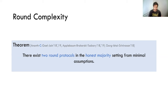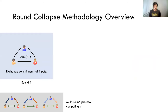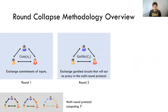All of these works actually rely on a round compression technique to achieve these two-round protocols. What does that mean? To start off, you have a multi-round protocol computing function F — say for simplicity it's three rounds, but it can be any arbitrary polynomial many rounds. To compress this into two rounds, in the first round you exchange commitments of the inputs. Parties commit to their inputs and broadcast them to all other parties. And in the second round, parties garble the circuit and broadcast the garbled circuit to everyone else. The garbled circuit itself is going to act as a proxy for the parties in this multi-round protocol.